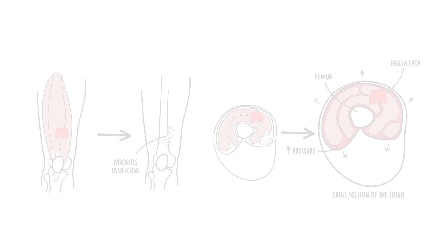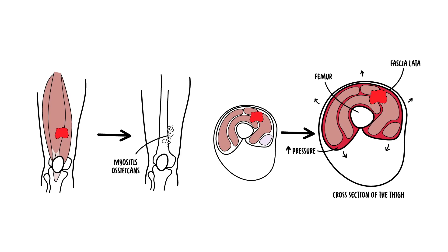In summary, this video looked at the anatomy of the quadriceps and two injuries involving the quadriceps muscle and their treatment: quadriceps strain and quadriceps contusion. Thank you for watching.